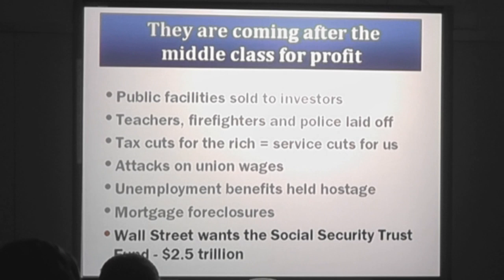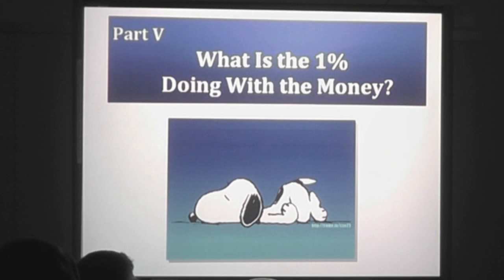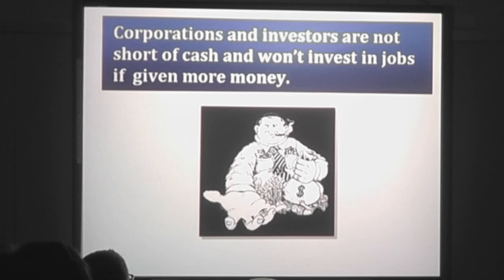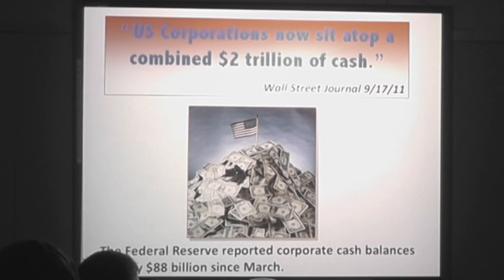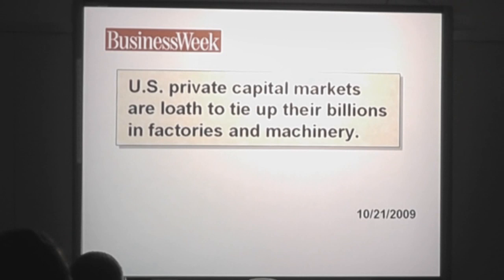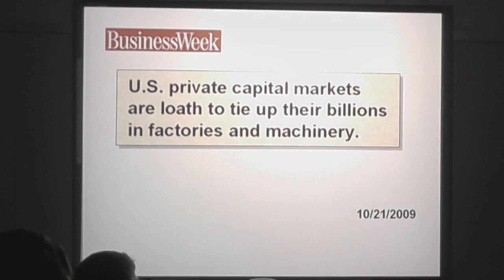What are the 1% doing with their money? Corporations and investors aren't short of cash — that is the biggest myth. They're sitting on a combined $2 trillion in cash. The Federal Reserve reports cash balances rose by $88 billion from March to September. Business Week says U.S. private capital markets are loath to tie up their billions in factories and machinery. But why is that? Why are they loath?